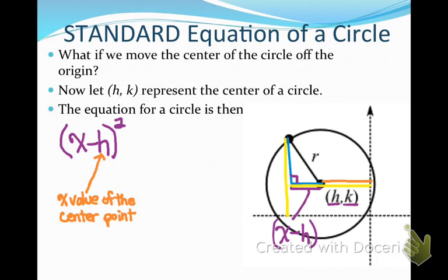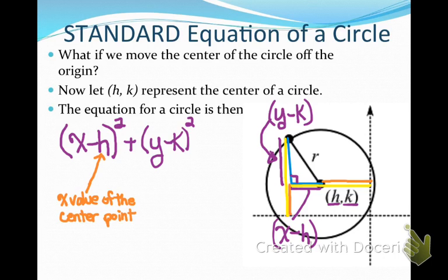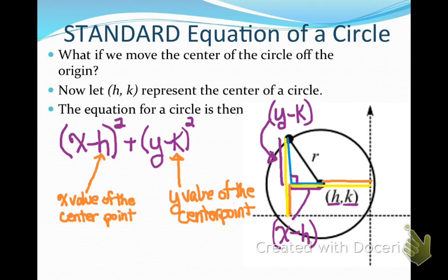Now let's look at the y value. The yellow line represents the length of y. But the orange line represents the length of k, because we're not on the origin anymore. So the purple leg length can be represented by y minus k. When we put that in our equation, we say the quantity y minus k squared, where k represents the y value of the center point. And it equals our radius squared. This is the standard equation for any circle: the quantity x minus h squared plus the quantity y minus k squared equals r squared.